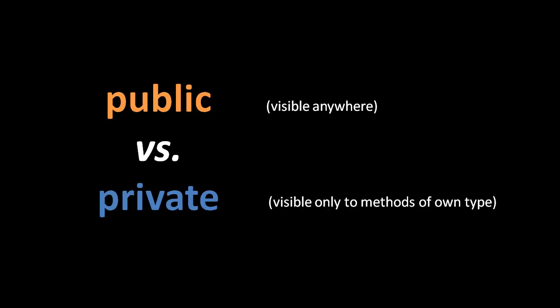When adhering to the principle of encapsulation we commonly make a distinction between public and private members of a class. Public members are visible anywhere — it's okay to access them from outside their class. Private members are only meant to be accessed by methods of the same class. When following encapsulation strictly, all fields should be kept private. Methods may be either private or public: those only used by the class itself stay private, while those used to interact with the class from outside are made public. Static languages actually prevent private members from being accessed outside their class; dynamic languages typically do not.